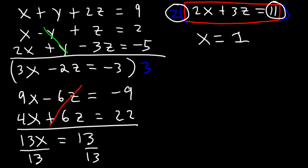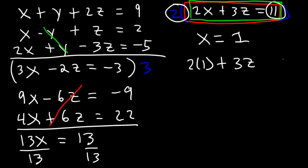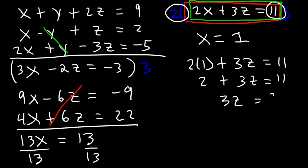Now that we have the value of x, let's calculate the value of z. Let's use the equation 2x plus 3z equals 11 before it was multiplied by 2. Let's replace x with 1. So 2 times 1 is 2. And if we subtract both sides by 2, 11 minus 2 is 9. And 9 divided by 3 is 3. So therefore, z is equal to 3.